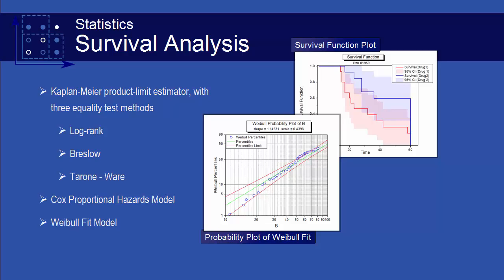Origin Pro also supports three survival analysis tools, including the Kaplan-Meyer estimator, Cox Proportional Hazard Regression, and Weibulfit.